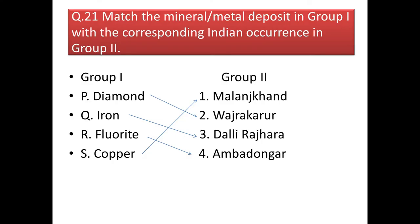Next question: match the mineral or metal deposit in group 1 with the corresponding Indian occurrence in group 2. Diamond is found in Vajrakarur, which is a famous diamond ore deposit. Malanjkhand is famous for its copper deposit. We get fluorite in Ambadongar, and we are left with only one option for iron — Dalli Rajhara. Our answer will be option D.